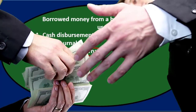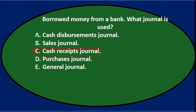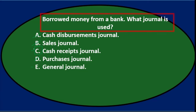If we borrowed money in order to buy equipment or something like that, then it might not fit in any of these and we'd have to go to the general journal. But assuming that we got cash when we borrowed, C — cash receipts journal — would be the correct answer.